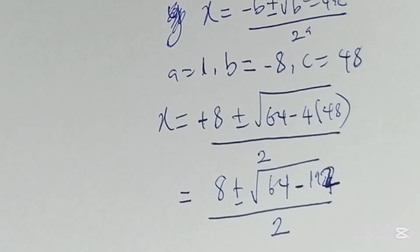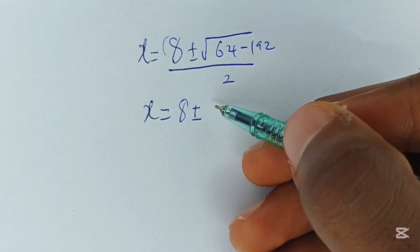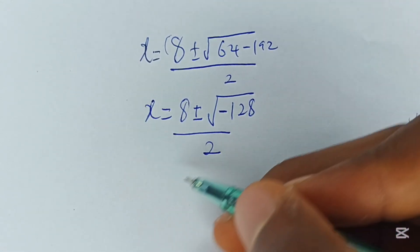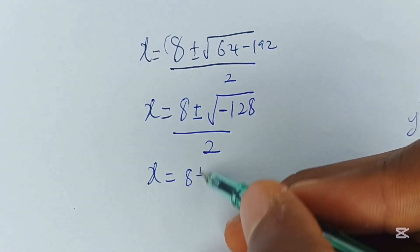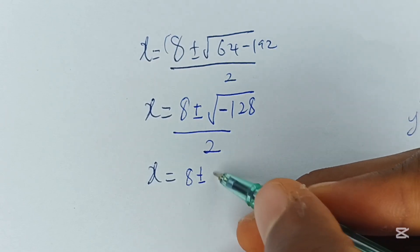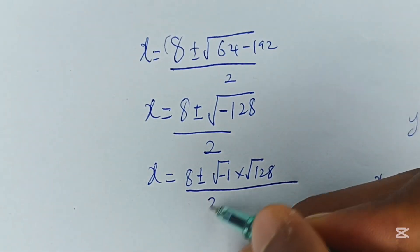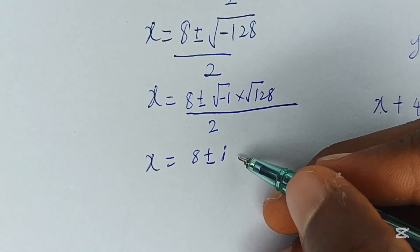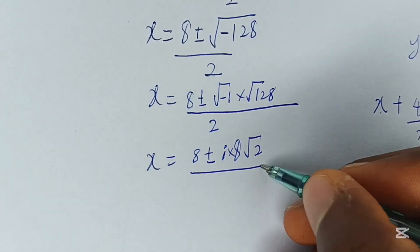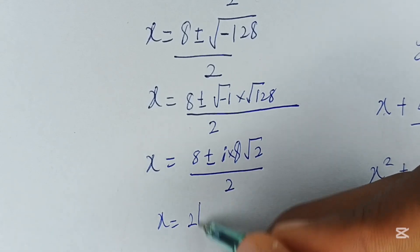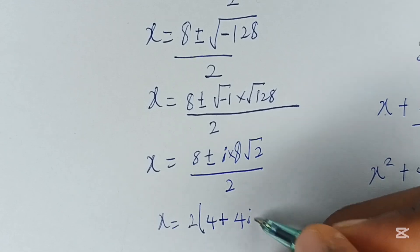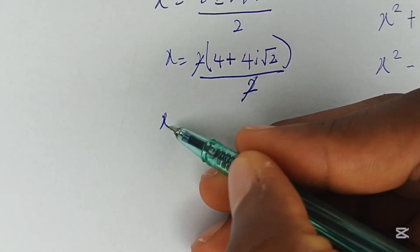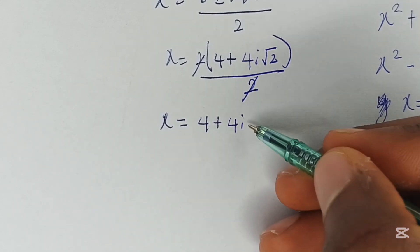So from here we have x equal to 8 plus or minus the square root of negative 128, all over 2. The square root of negative 128 equals the square root of negative 1 times the square root of 128. Simplifying, x equals 2 times 4 plus or minus 4i root 2, all over 2.